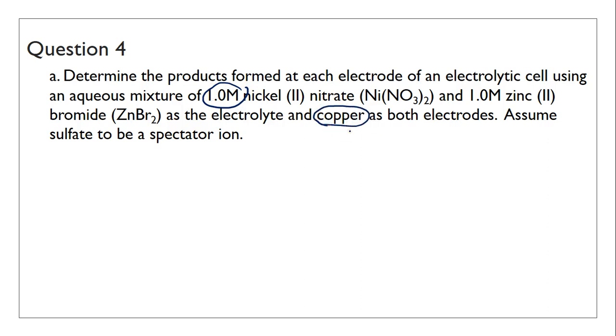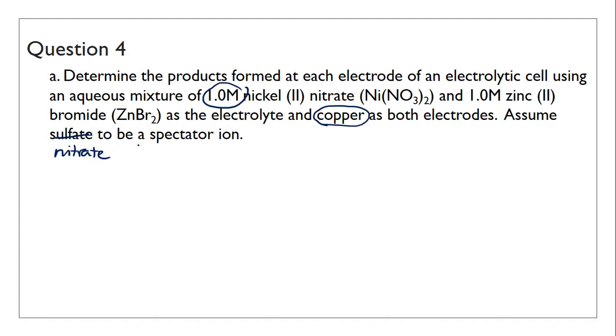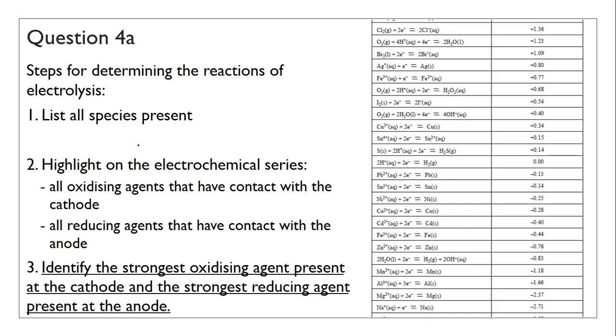You're supposed to assume that nitrate is a spectator ion, so I'm going to edit that in the question. Let's go through the steps again. We're going to list the species present. We have an electrolyte which contains nickel nitrate aqueous and zinc bromide aqueous.